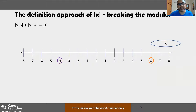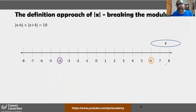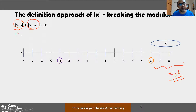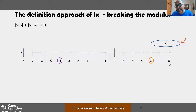When x is greater than or equal to 6, both (x − 6) and (x + 4) will always be non-negative. A helpful trick: take any one number in this region, say x = 10. Then x − 6 = 4 (positive) and x + 4 = 14 (positive). If it's true for one value, it's true for all values in that region.